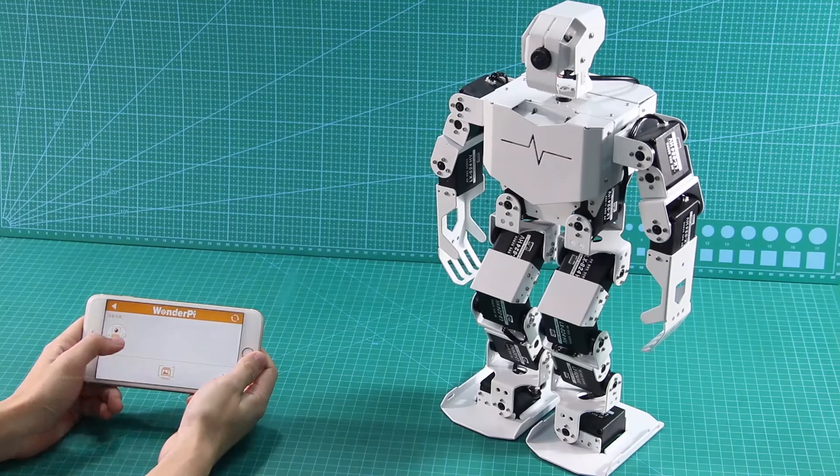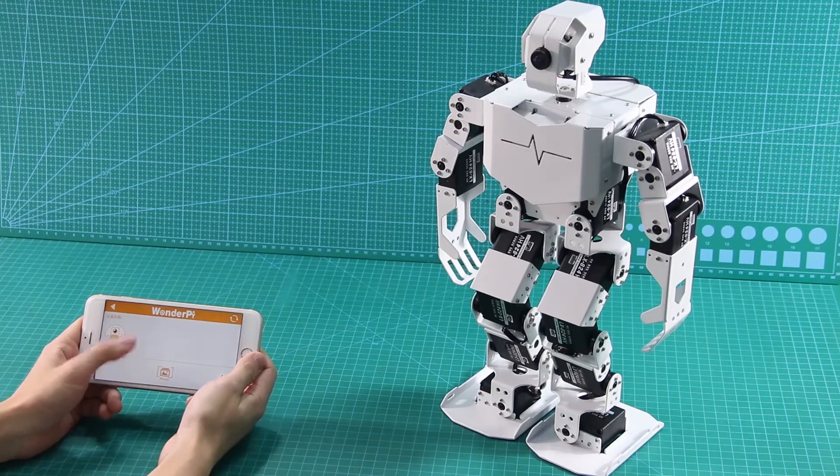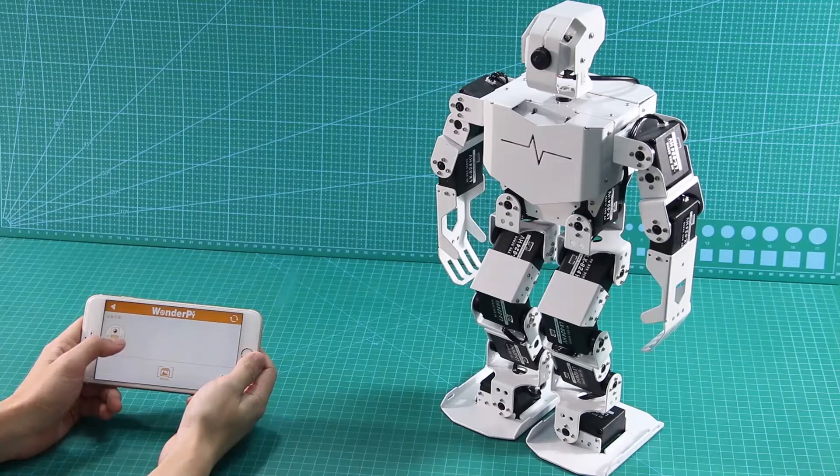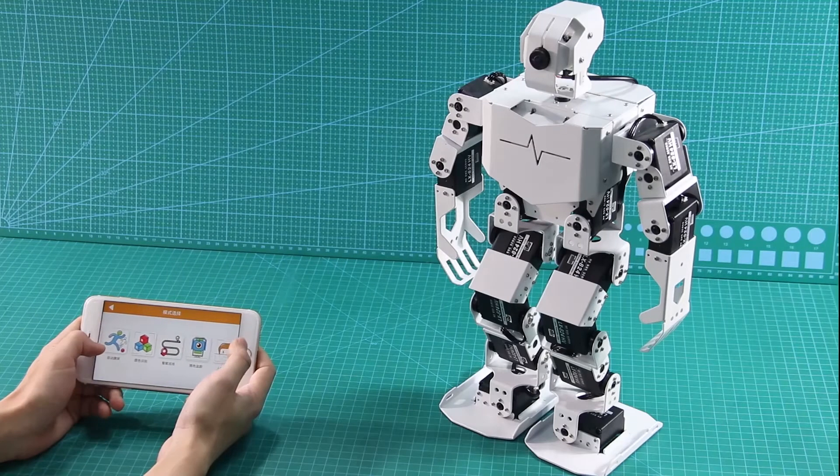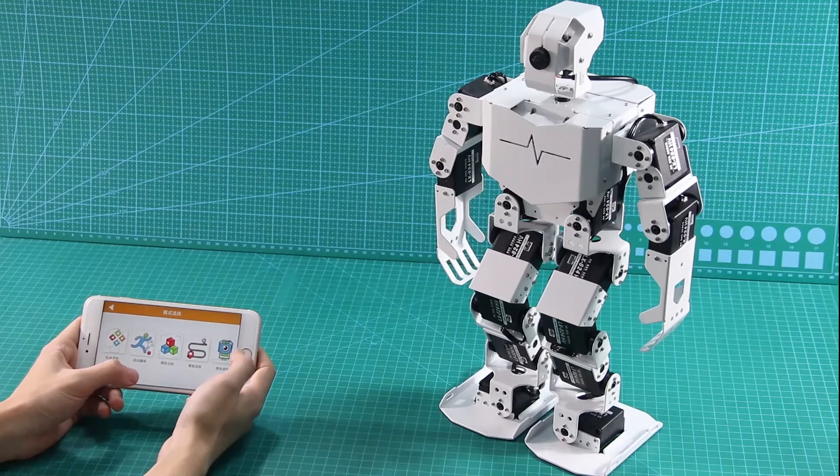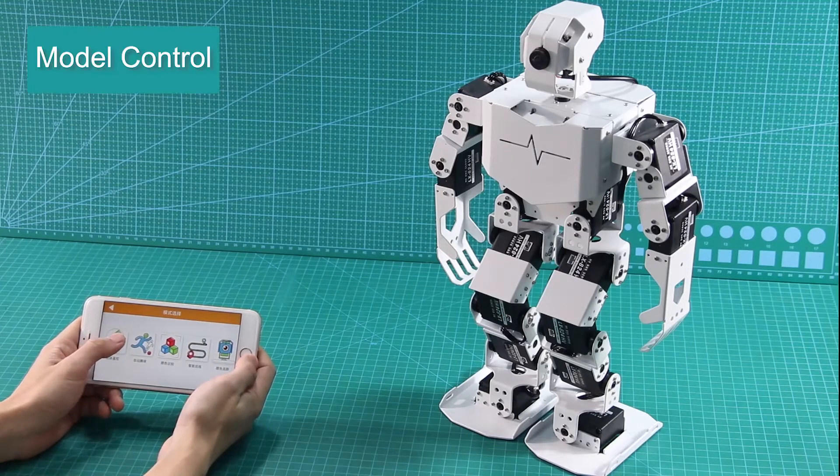Click the robot icon to enter the interface. The interface displays all AI vision games. First, we click a game such as Module Control to enter the corresponding interface.